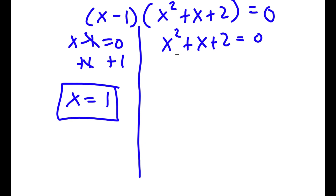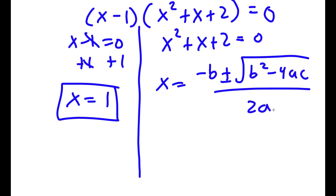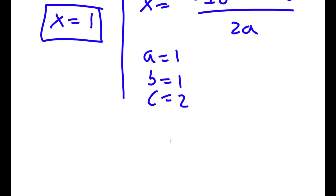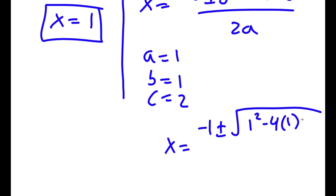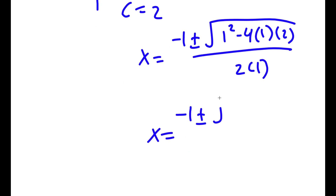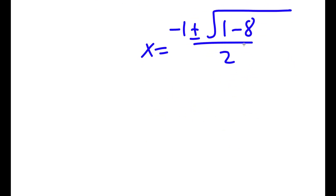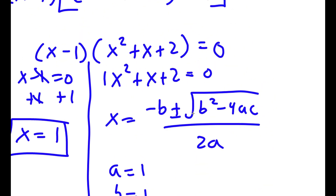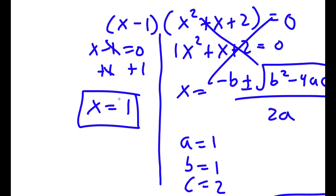Now for x squared plus x plus 2 equals 0, I'm going to use the quadratic formula: negative b plus or minus the square root of b squared minus 4ac, all over 2a. In this case a equals 1, b equals 1, and c equals 2. So I have negative 1 plus or minus the square root of 1 squared minus 4 times 1 times 2, all over 2. That gives me negative 1 plus or minus the square root of 1 minus 8, over 2. And 1 minus 8 is negative 7. The square root of negative 7 — you can't take the square root of a negative number, meaning this equation has no real solution. So our only solution to this problem is x equals 1.